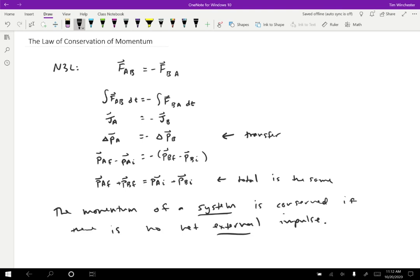What do I mean by a system? Well, a system is just anything that I want to consider together. I'm allowed to draw a dotted line around any particles that I want to be in the same system. As long as there are no external net forces causing an external net impulse, the total momentum of that system will stay constant.